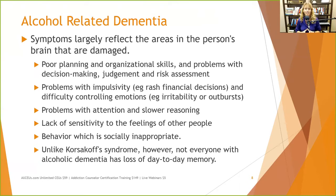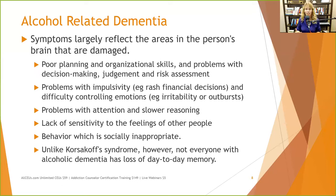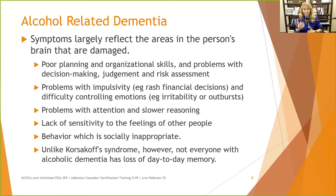Symptoms of alcohol-related dementia reflect the areas of the brain that are damaged. These include poor planning and organizational skills, problems with decision-making, judgment, and risk assessment, problems with impulsivity and rash financial decisions, and difficulty controlling emotions — irritability and outbursts. We can use emotion regulation, vulnerability prevention, distress tolerance skills, and relapse prevention techniques to help people control their emotions during this period.